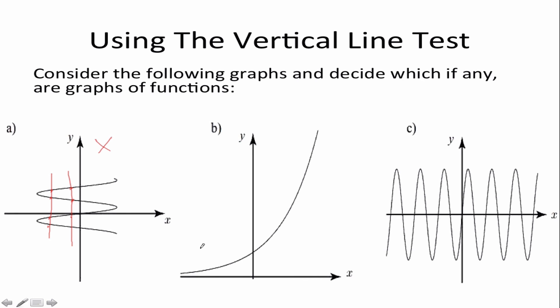Let us move on to b. If I draw a vertical line down this graph, you can see that my vertical line only intercepts one point. Therefore this graph passes the vertical line test and is a function.